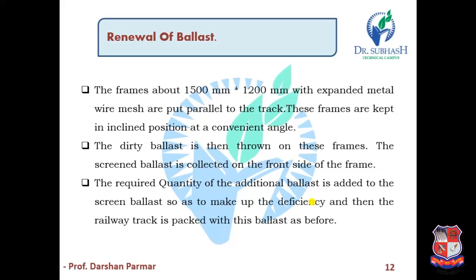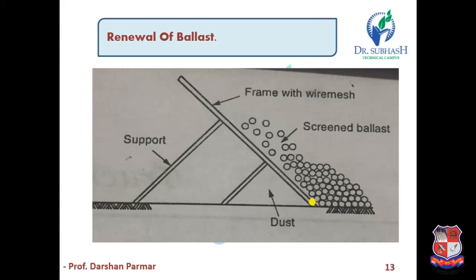This type of ballast is put on the railway track. The figure clearly shows the support structure where dust particles are collected, and the screened ballast is thrown to the front side of the wire mesh frame. The screened ballast is on one side, the support is in the middle, and the dust is collected on the other side.